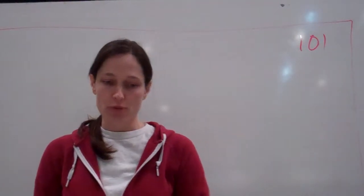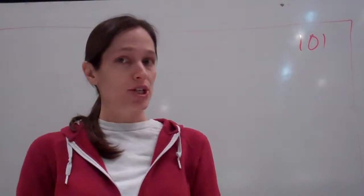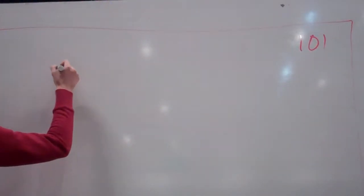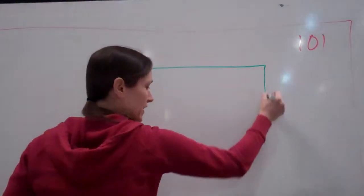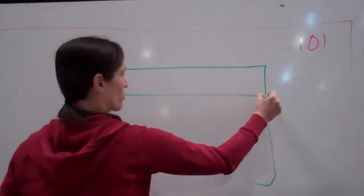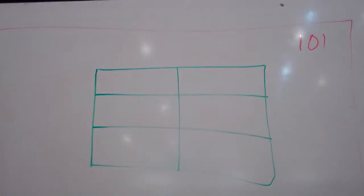This lesson is on ratio problems involving totals. Up to this point, we've just done ratio problems, but we haven't had a total. So what you're going to do is draw a box, and this time your box, instead of just doing two rows, you're going to do three. So draw three rows like that.